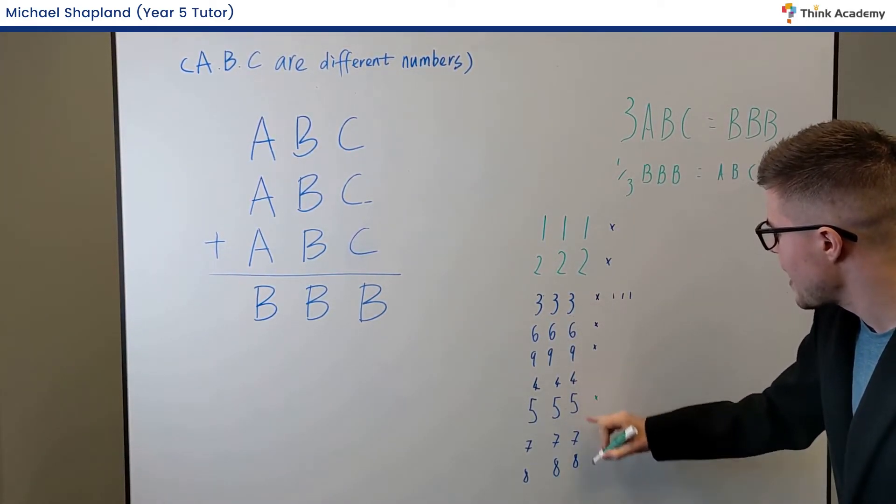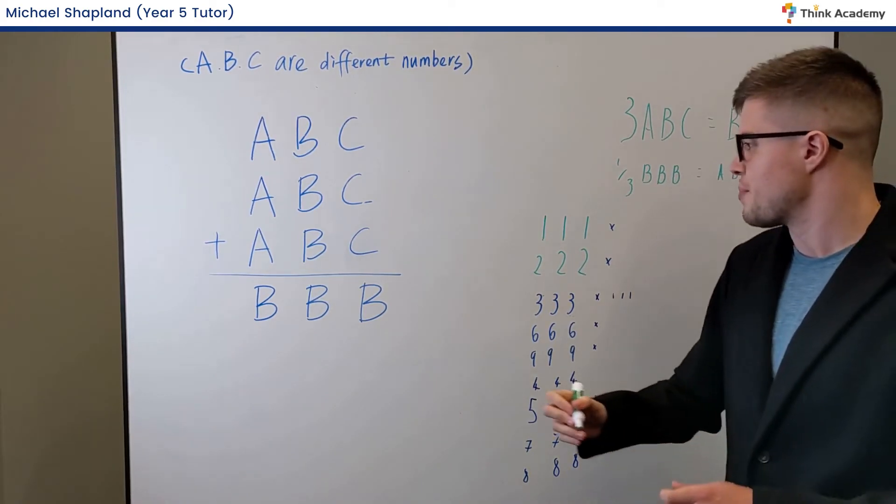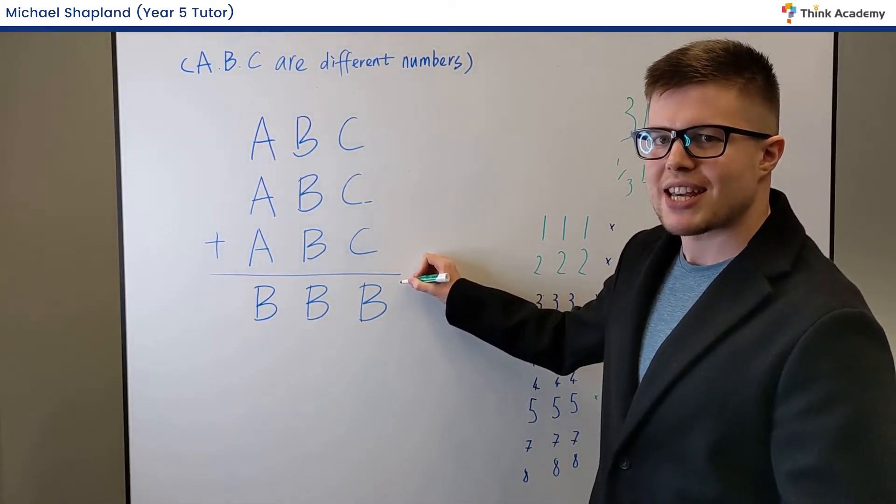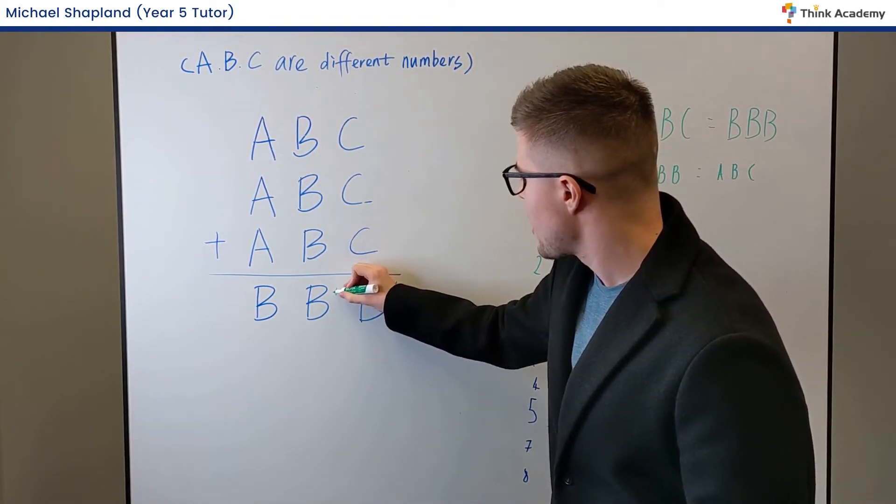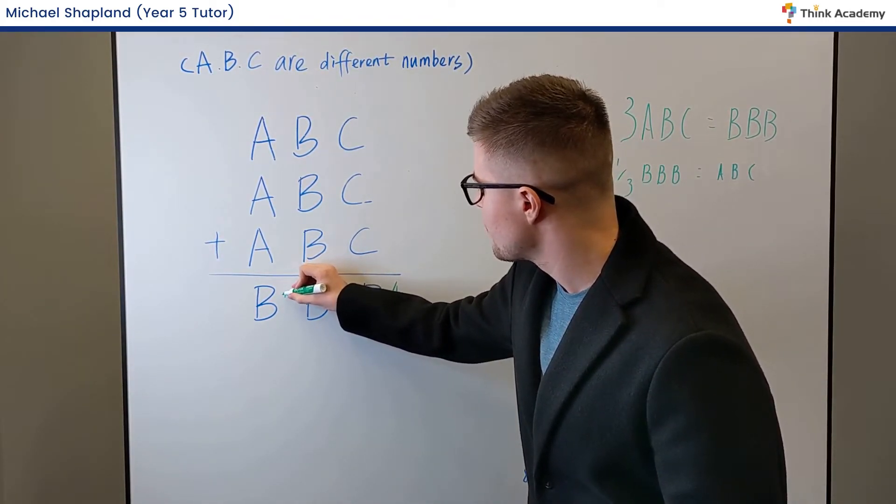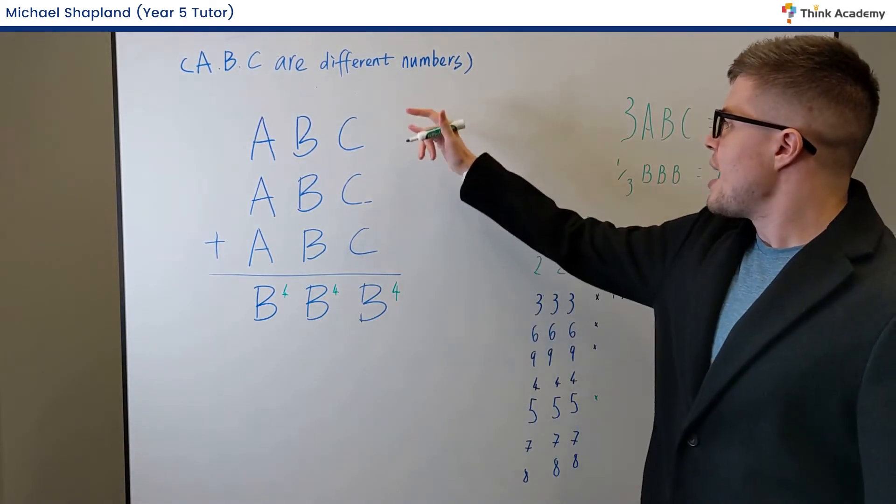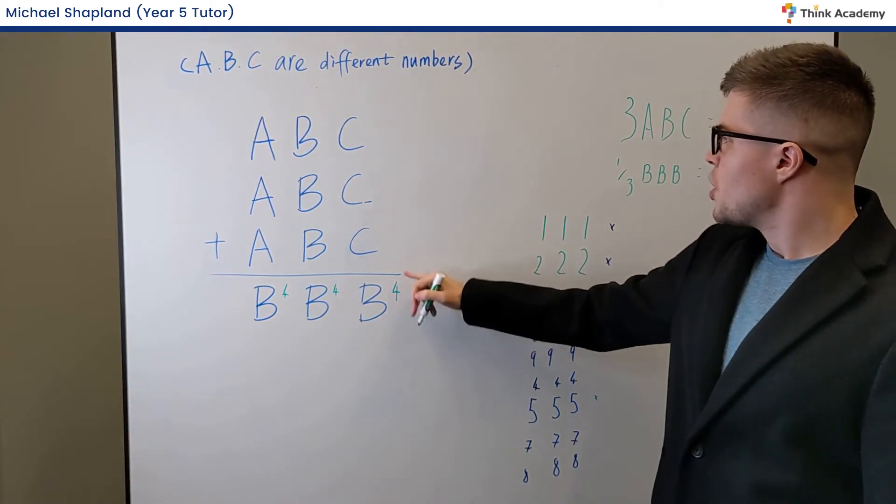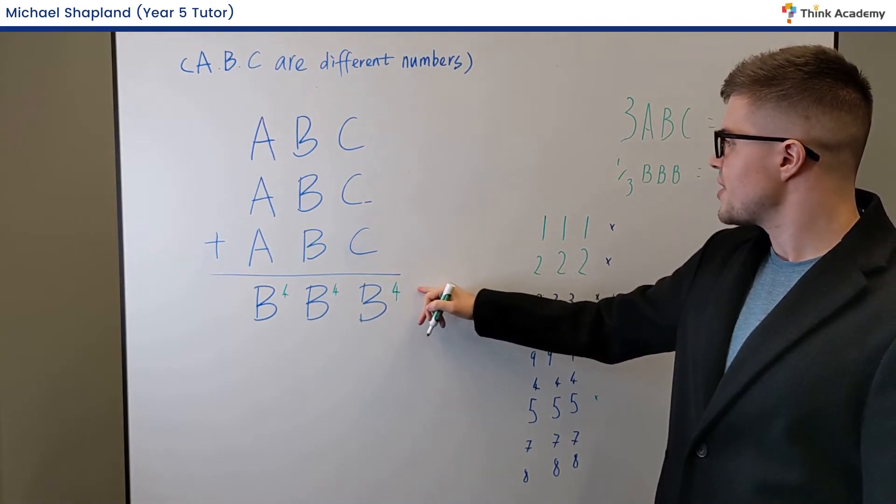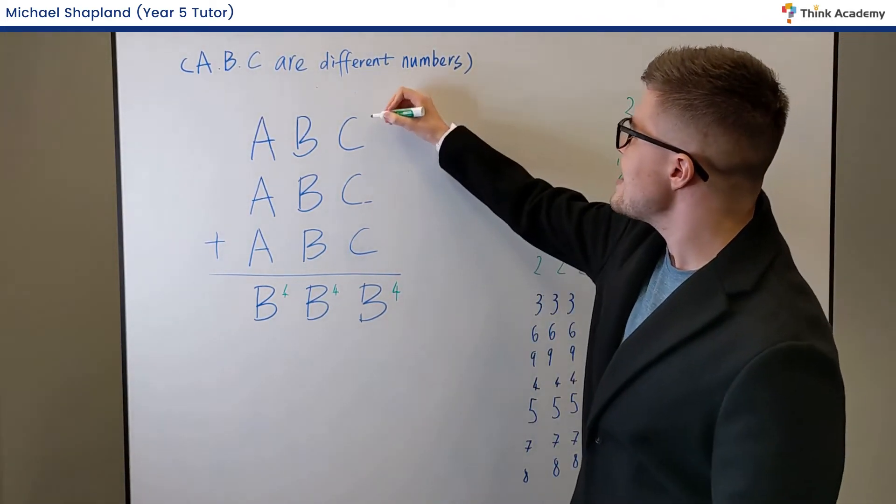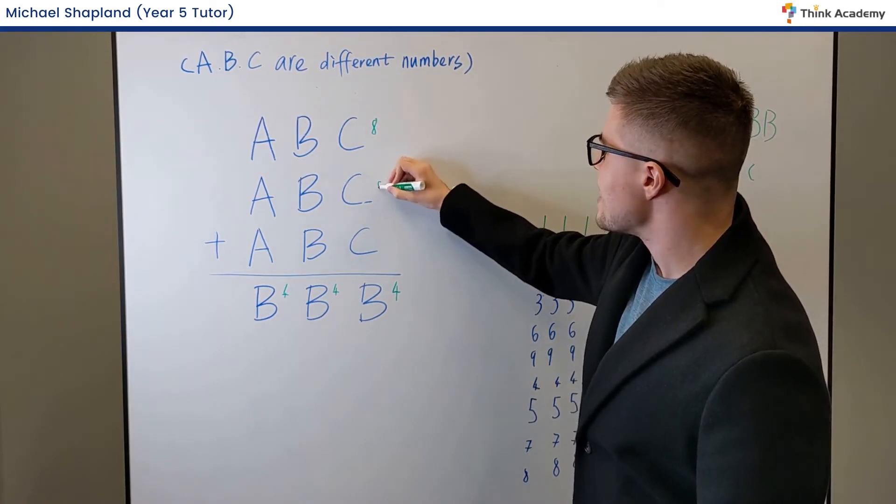So for these final three numbers, we can just do a bit of trial and improvement here. So let's think about if B is 4. We've got 4 here, 4 there, and 4 in the hundreds. Well, for C, either 3 times C is 4, or 3 times C produces a number where 4 is the units. And if we think about our multiplication skills, C in this instance must be 8.